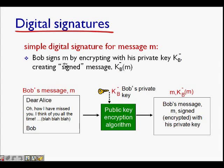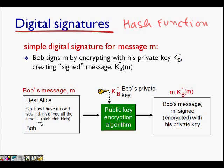In this lecture we will learn about digital signatures using hash functions. We will use hash functions to make the digital signature smaller. In the last class we learned that Bob is sending a message to Alice saying 'Dear Alice, I love you, how I have missed you, I think of you all the time.' He wants to encrypt this message and have a digital signature, meaning that when Alice receives the message she can verify it was sent by Bob, not forged by someone like man-in-the-middle Trudy, and that later Bob cannot repudiate having sent the message.